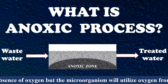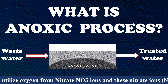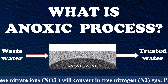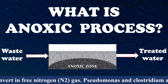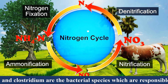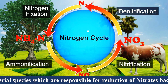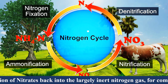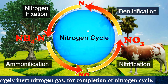The microorganisms will utilize oxygen from nitrate ions, and these nitrate ions will convert into free nitrogen gas. Pseudomonas and Clostridium are the bacterial species responsible for the reduction of nitrates back into largely inert nitrogen gas, completing the nitrogen cycle.